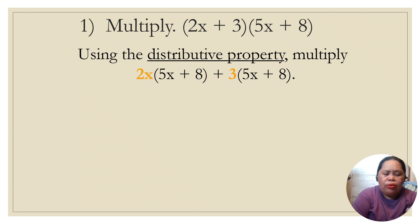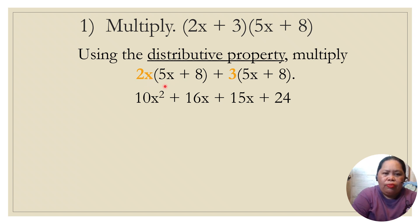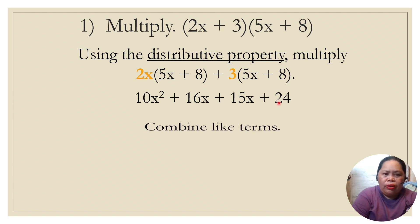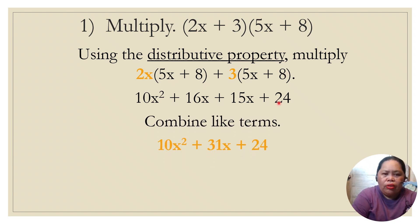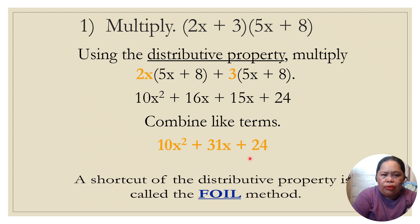We distribute like this. So 2x times 5x equals 10x squared — we add the exponents. Then 2x times 8 equals 16x. Then 3 times 5x is 15x, and 3 times 8 equals 24. Then we combine like terms: 10x squared plus 16x plus 15x plus 24, giving us 10x squared plus 31x plus 24 as the final answer.